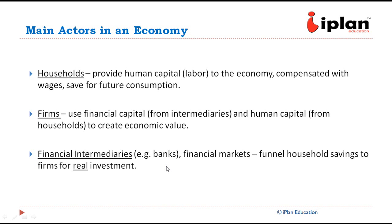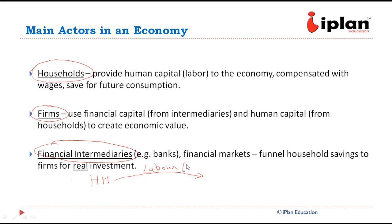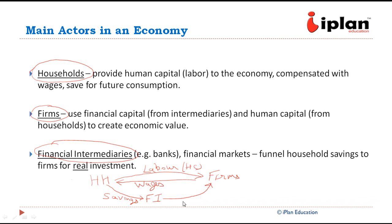There are three main actors in the economy. The first one is households. Then there are firms and there are financial intermediaries. The households provide their labour, or we can say human capital, to firms which gives them wages. They spend some and then they save. Their savings go to financial intermediaries which are mostly banks, and they funnel this to firms. This is called financial capital. This is how broadly the dynamics of these three actors work.